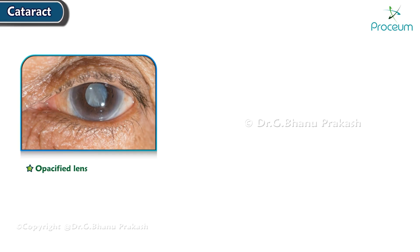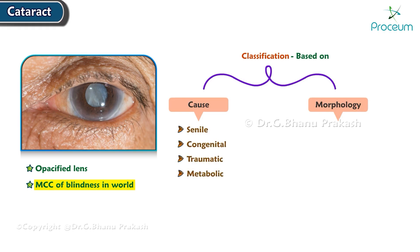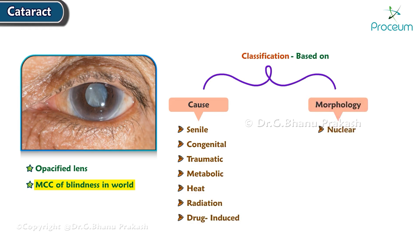Cataract means opacified lens. It is the most common cause of blindness in the world. There are various classifications for cataract based on cause and morphology. Cataract types based on cause are senile, congenital, traumatic, metabolic, heat, radiation, and drug-induced cataract. Morphological cataract has three types: nuclear cataract, cortical cataract, and posterior subcapsular cataract.